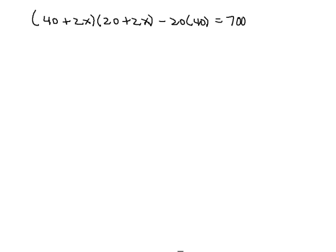So to solve the equation, we'll first multiply the two binomials we see in the first term. That will give us 800 plus 80X plus 40X plus 4X squared, then minus 800 equals 700.